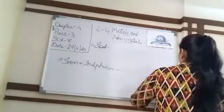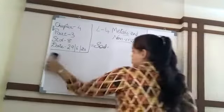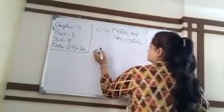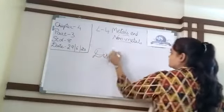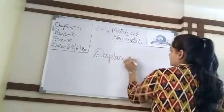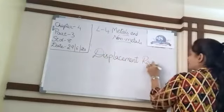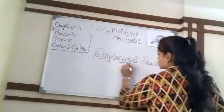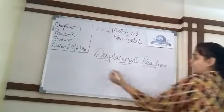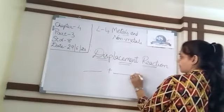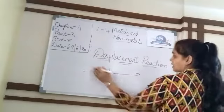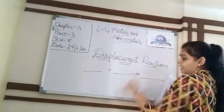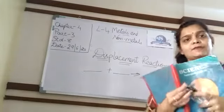Now we go to displacement reaction. What is displacement reaction, children? This is a chemical reaction where one metal takes the place of another metal — that metal is displaced. So this is called the displacement reaction.